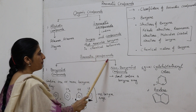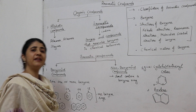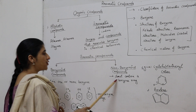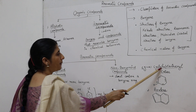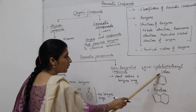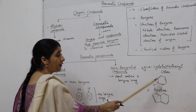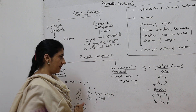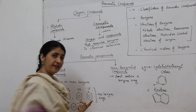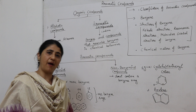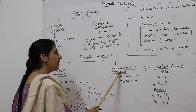The second classification of aromatic compounds is non-benzenoid compounds. As the name indicates, non-benzenoid compounds are those compounds which don't contain a benzene ring. The first example is cycloheptatrienyl cation — it is an aromatic compound but does not contain a benzene ring. The second example is azulene, which also does not contain a benzene ring but acts as an aromatic compound, so it is also called a non-benzenoid compound.